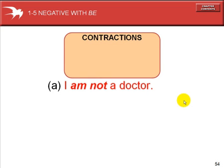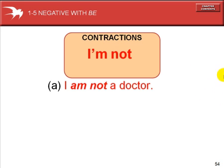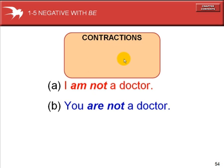Now we're using the negative. I am not. I am not a doctor. We can also use the contraction — I'm. The apostrophe takes the place of the letter A. I am not is the same as I'm not.